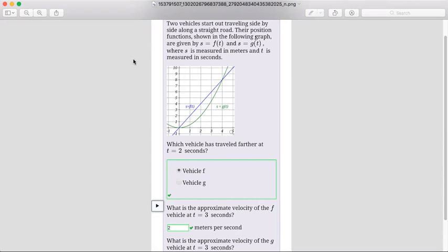Their positions shown in the following graph are given by s equals f of t and s equals g of t, where s is measured in meters and t is measured in seconds.